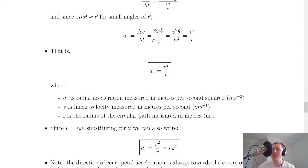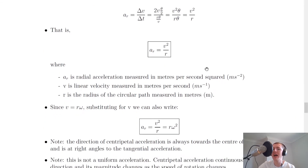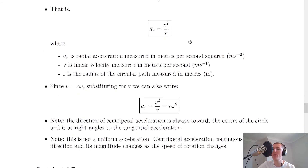Bringing the V up to the top and multiplying, then cancelling the 2s, gives us V squared theta over R theta. The theta on the top and bottom cancel out, giving us AR equals V squared over R. That is our expression for centripetal or radial acceleration, and it's the equation you'll see on the relationship sheet in the exam.